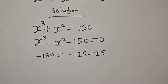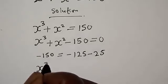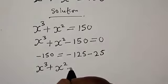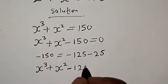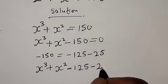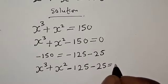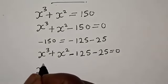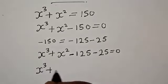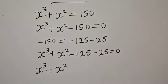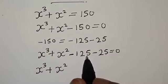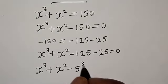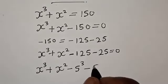So we have s raised to power 3 plus s squared minus 125 minus 25 is equal to 0. Now, -125 is the same as negative 5 raised to power 3, and -25 is the same as negative 5 squared.